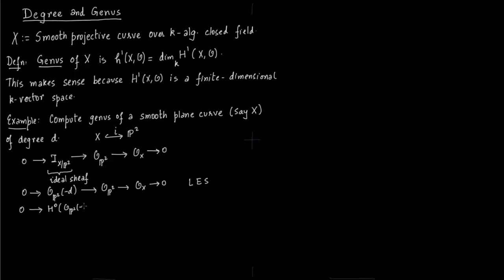So now you form the long exact sequence. You first have h⁰, again h⁰ of O_X, then you go to groups h¹, h¹, h¹, again h¹ of O_X, and so on.